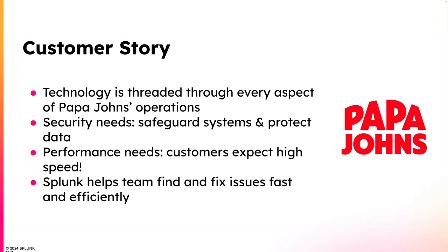On the security side, Papa John's must safeguard systems and protect data for all of its more than 26 million Papa John's reward members — myself included. With the Splunk platform, teams have centralized insight and the ability to reuse the same data set for multiple purposes across security and operations. On the performance side, customers expect blistering speed — just a few seconds of latency can mean a customer abandons and orders elsewhere. While this pace of innovation and scale of operations could create vulnerabilities in Papa John's system, the Splunk platform helps the team find little problems and fix issues fast, giving them more confidence to release things faster.